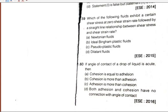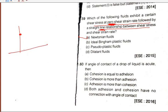Which fluid exhibits a certain shear stress at zero shear strain followed by a straight-line relationship like a Newtonian fluid? This is ideal plastic or Bingham plastic behavior — it has a yield shear stress and then increases linearly. So D (Bingham plastic) will be the answer.